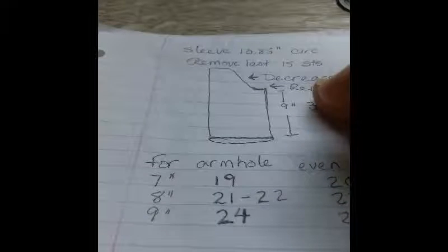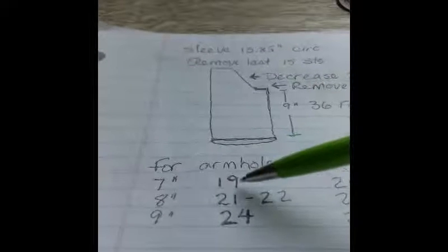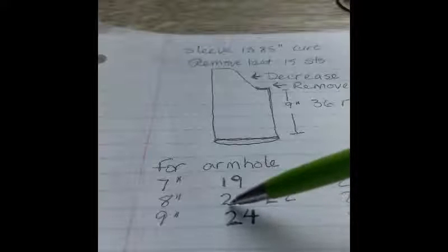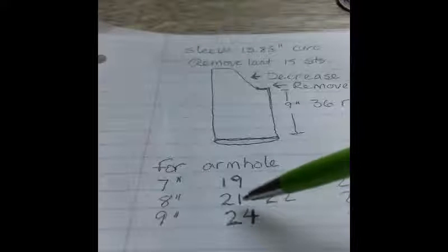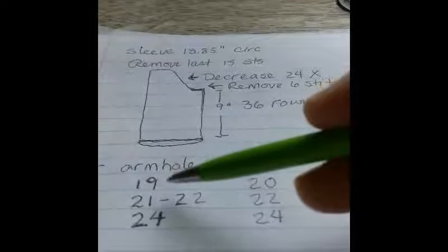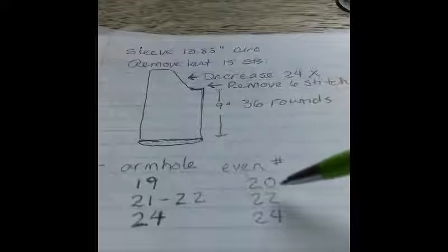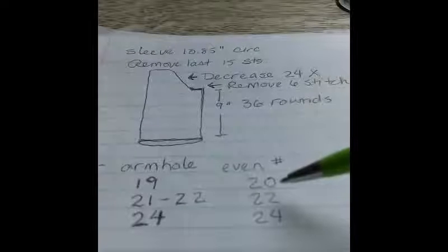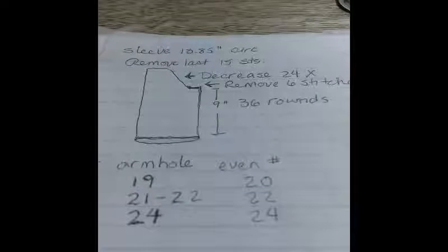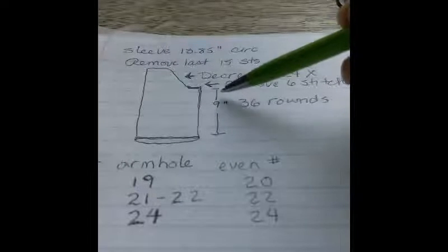When I did the math for the number of decreases for the sleeve, this is what I come up with, and we really need them to be an even number. This says 21 to 22 because it was 21.44 needed, right in the middle almost. I'm going to suggest that every time we need to change it to another number, we round up. My reason is that I would rather ease my sleeve into the armhole than stretch my armhole to meet my sleeve.